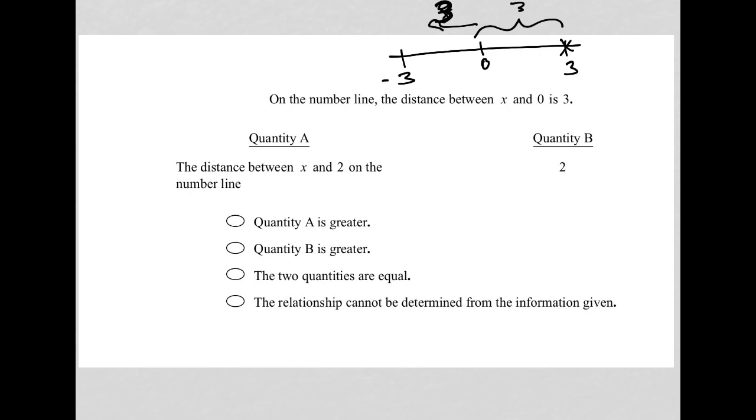So, let's see. Quantity A says the distance between x and 2 on the number line. Well, between x and 2, if x is 3, the distance between x and 2 would be 1. But if x were negative 3, that distance from negative 3 to positive 2 would be 5. So, I don't know. It could be 1 or 5.